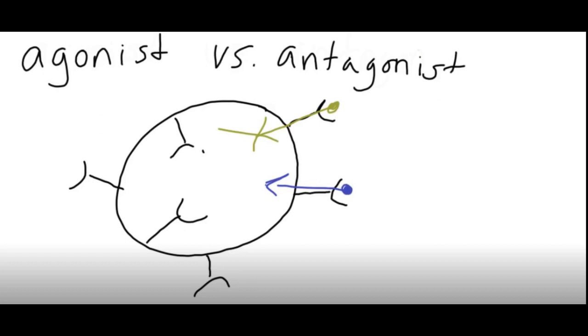When we talk about agonist and antagonist drugs, we're talking about the ability to modify the normal function of these receptors.